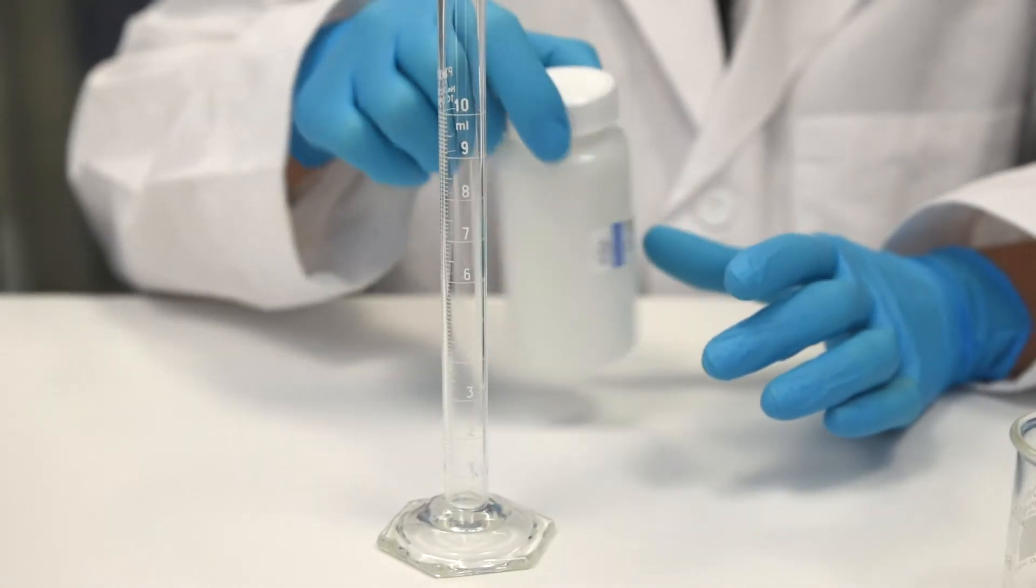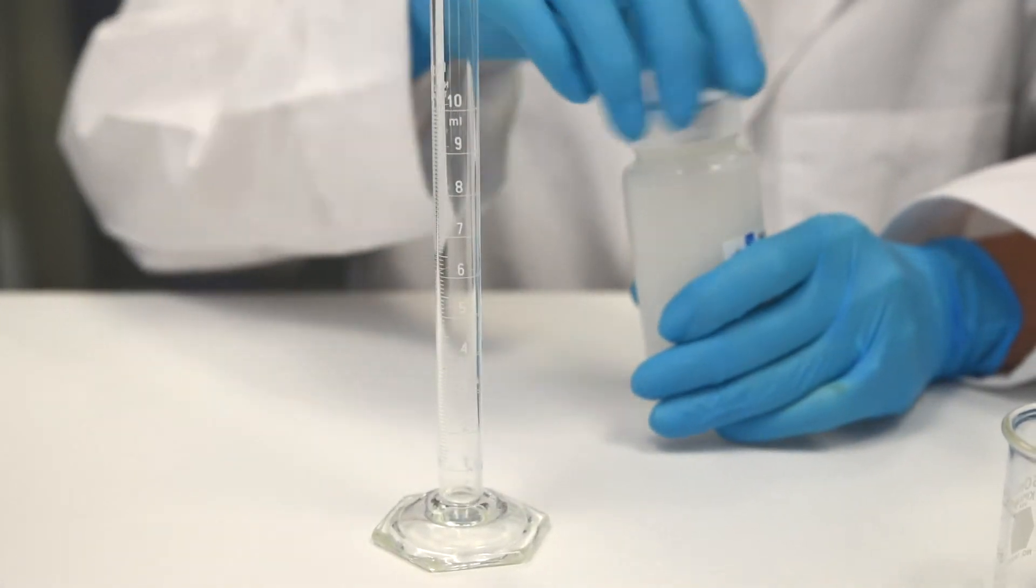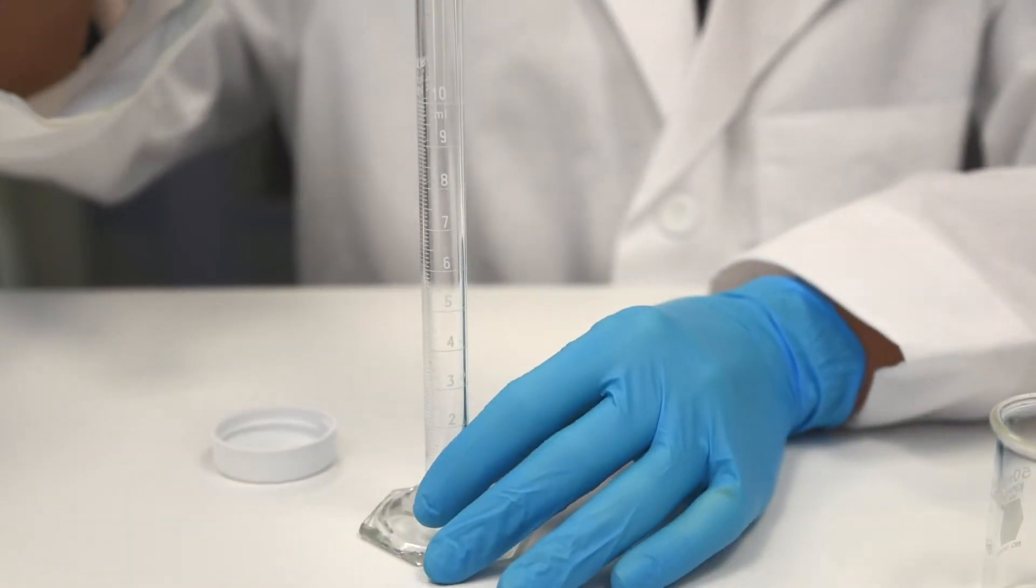Step 5: Aliquot 6ml for each of the 10 groups, mixing well in between each dispense.